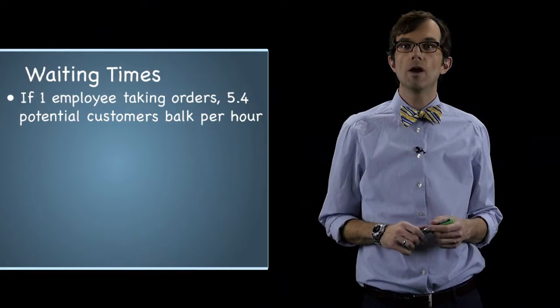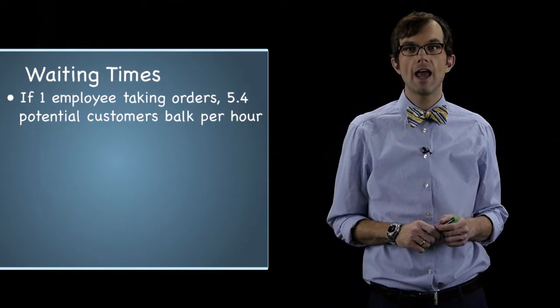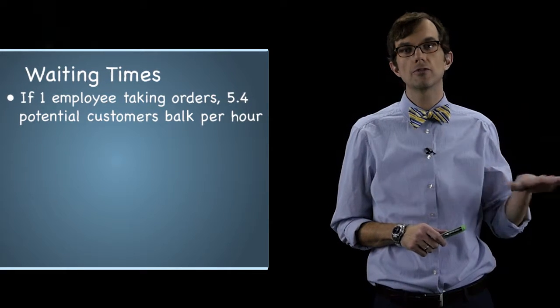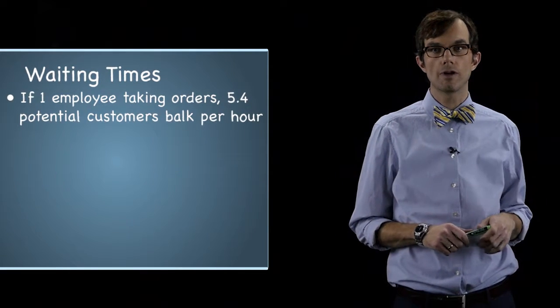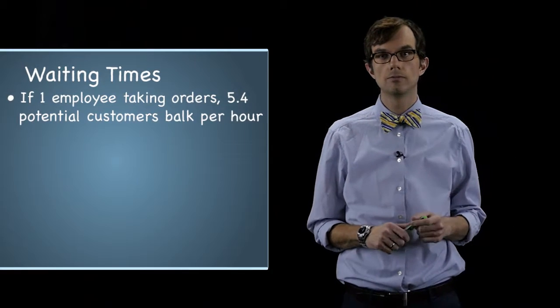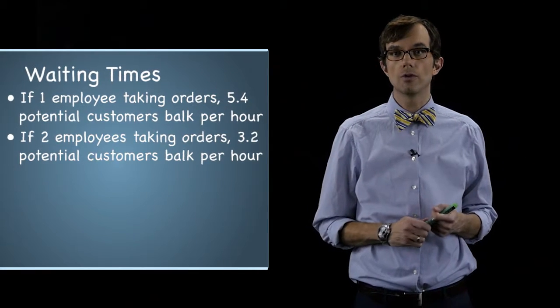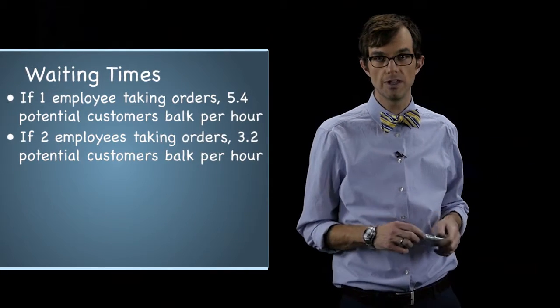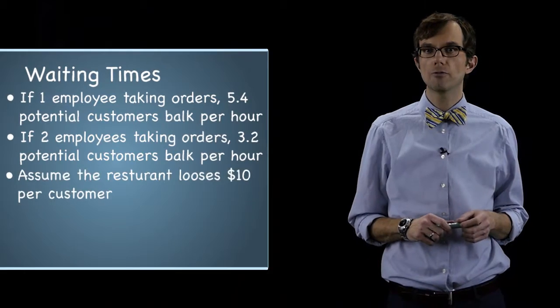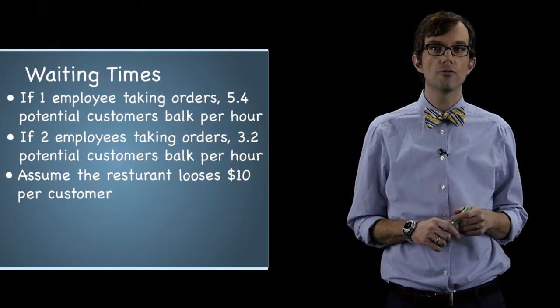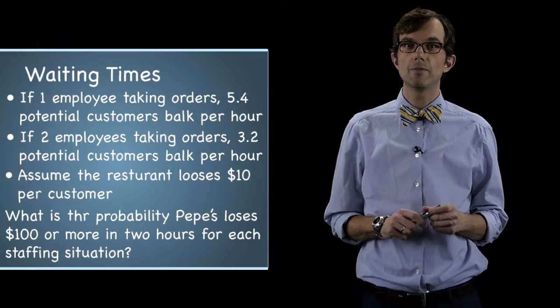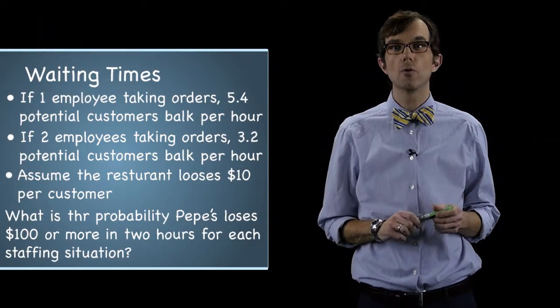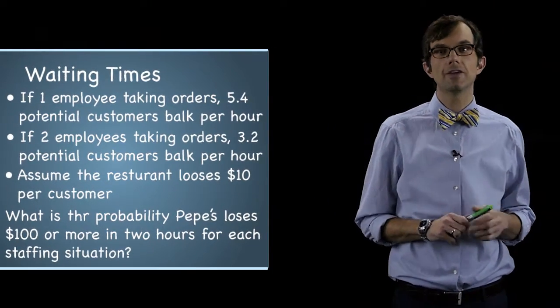Let's take a look at one last Poisson example. Pepe Delgado's, the best restaurant in Norman, estimates that if one employee is taking orders, an average of 5.4 potential customers leave the restaurant per hour without ordering — that is, they balk because the line is too long. If two employees are taking orders, the number of balking customers reduces to an average of 3.2 potential customers per hour. Assume that the restaurant loses ten dollars in revenue for each customer that balks. What's the probability that Pepe's loses one hundred or more dollars in two hours for each staffing situation?